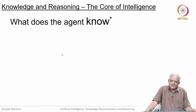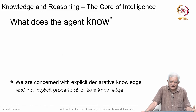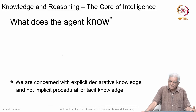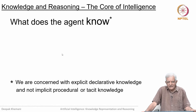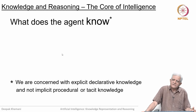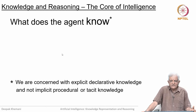What we want to start with is to say that an intelligent agent — what does it know about the world, its domain and so on? When we talk about knowledge, we are concerned with what we have often called declarative knowledge — knowledge which can be written down in a language like English. Not necessarily procedural or tacit knowledge, because there are other forms of knowledge that we have which are not so easy to capture.